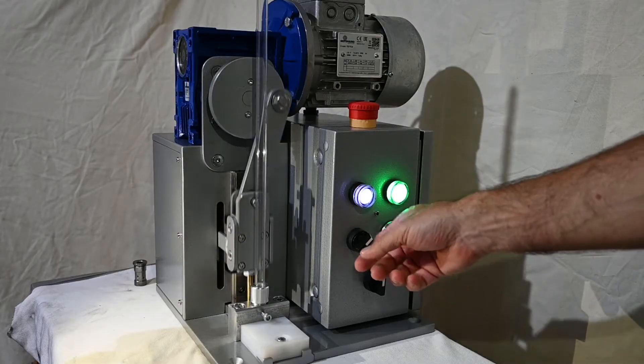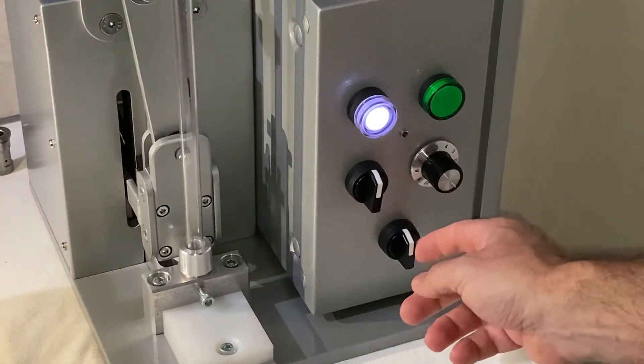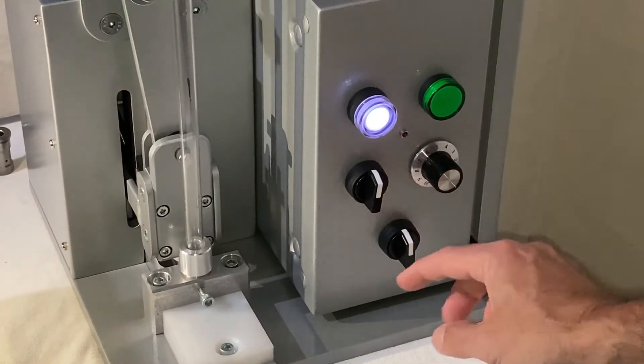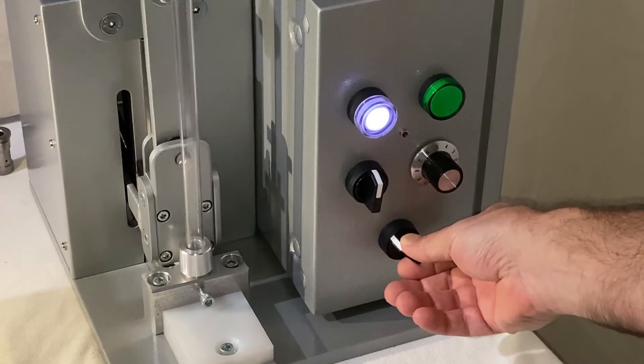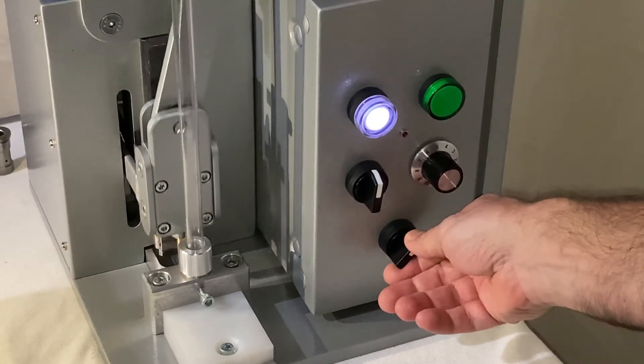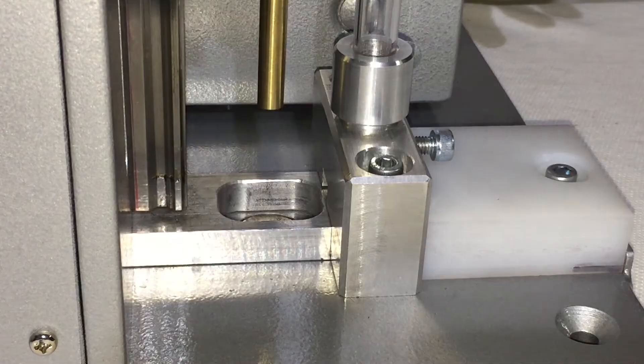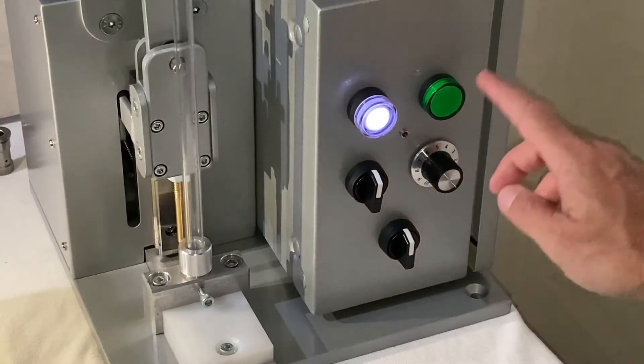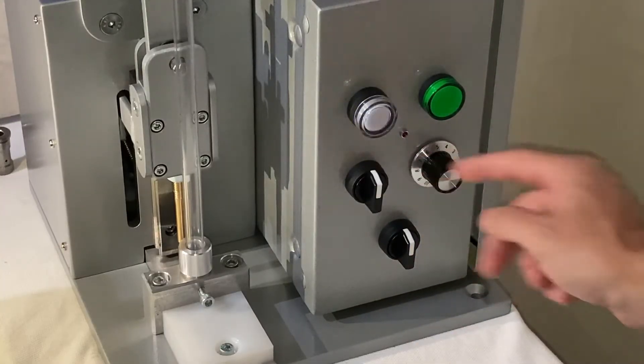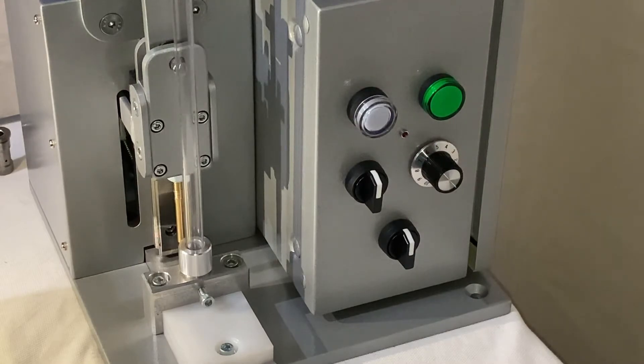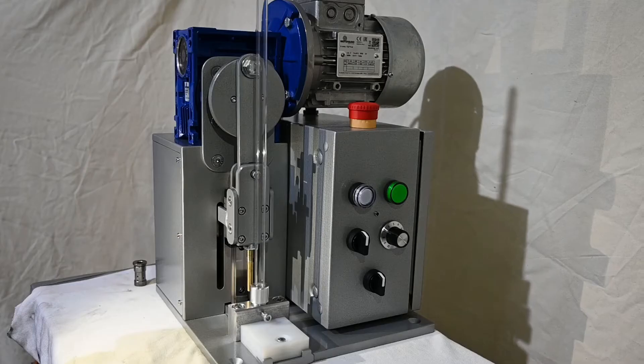To change the die, stop the machine. It has a jog function, forward and reverse, to get the punch into a suitable location. Put it in the upper position, turn the machine off for safety reasons, and change the die.